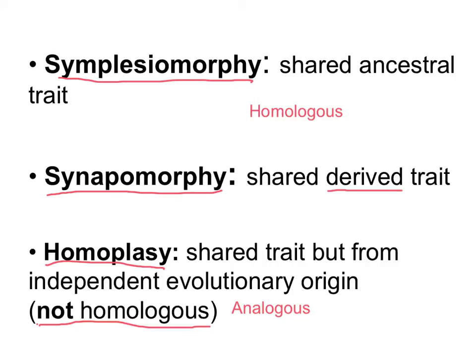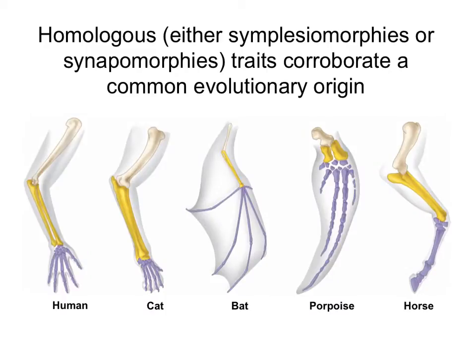Symplesiomorphies and synapomorphies are both homologous traits. The difference is that in symplesiomorphy the trait is more ancestral, while in synapomorphies the trait is derived or newer. Both are examples of homologous traits that show a common evolutionary origin.